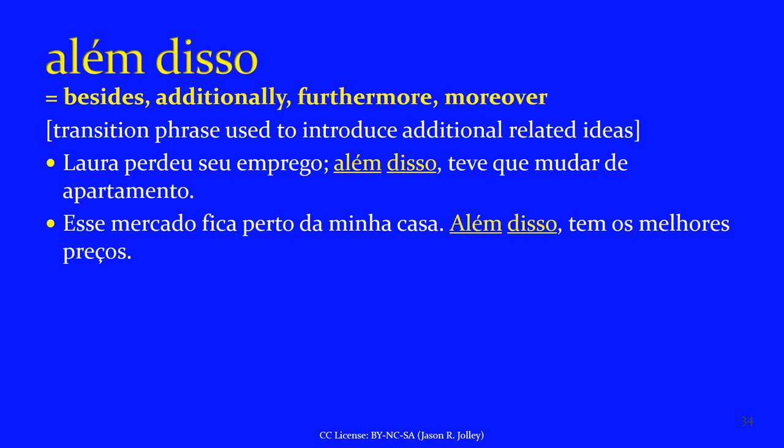ALÉM DISSO means 'besides,' 'additionally,' or more formally 'furthermore' or 'moreover.' It's used to introduce additional related ideas. 'Laura perdeu seu emprego. Além disso, teve que mudar de apartamento' — she lost her job; furthermore, she had to change apartments. 'Esse mercado fica perto da minha casa. Além disso, tem os melhores preços' — that grocery store is close to my house; moreover, it has the best prices.